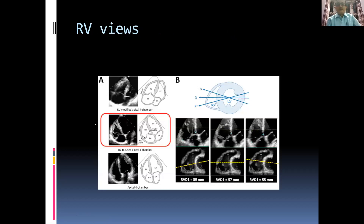RV measurements are taken from the RV-focused apical four-chamber view. To obtain this view, angulate the transducer towards the sternum from the standard apical four-chamber view. All RV measurements must be taken from this RV-focused view, which will be demonstrated during the practical session.